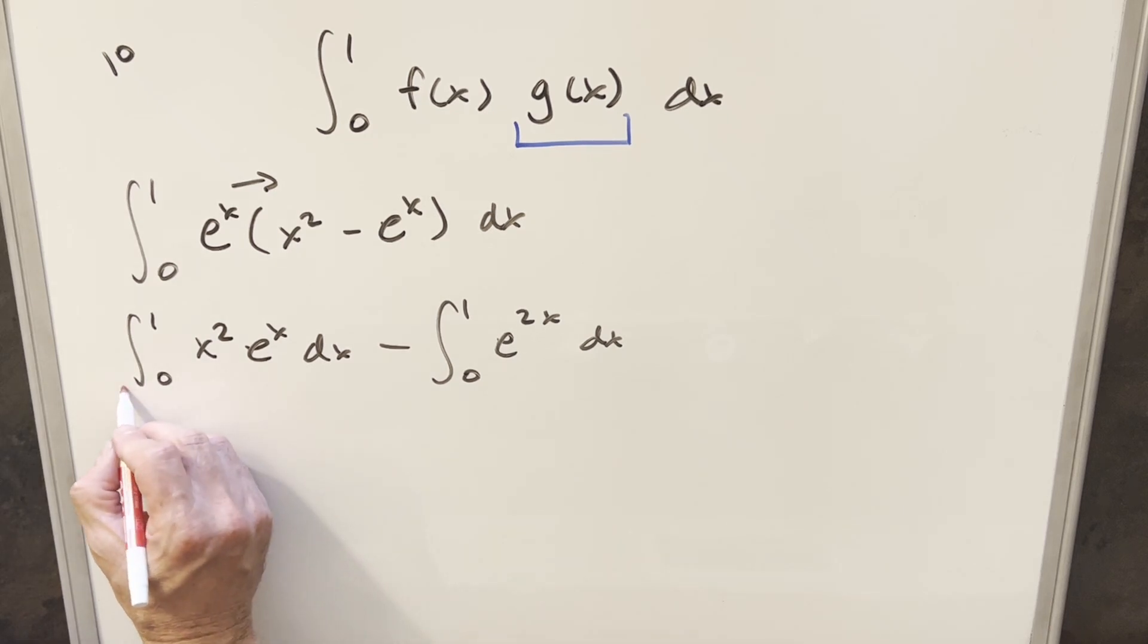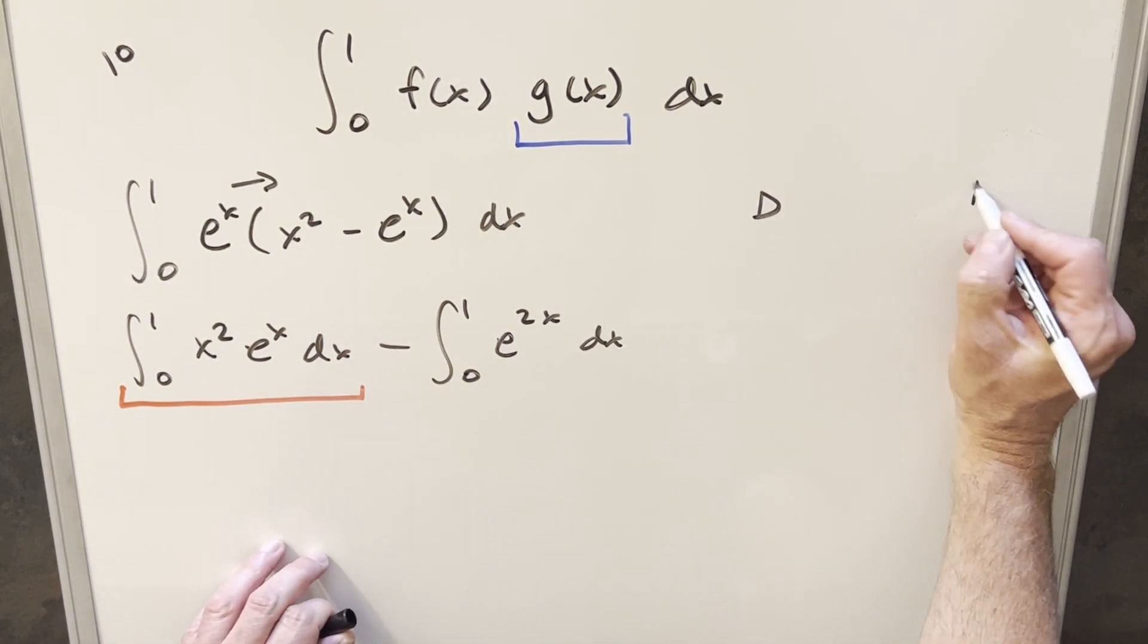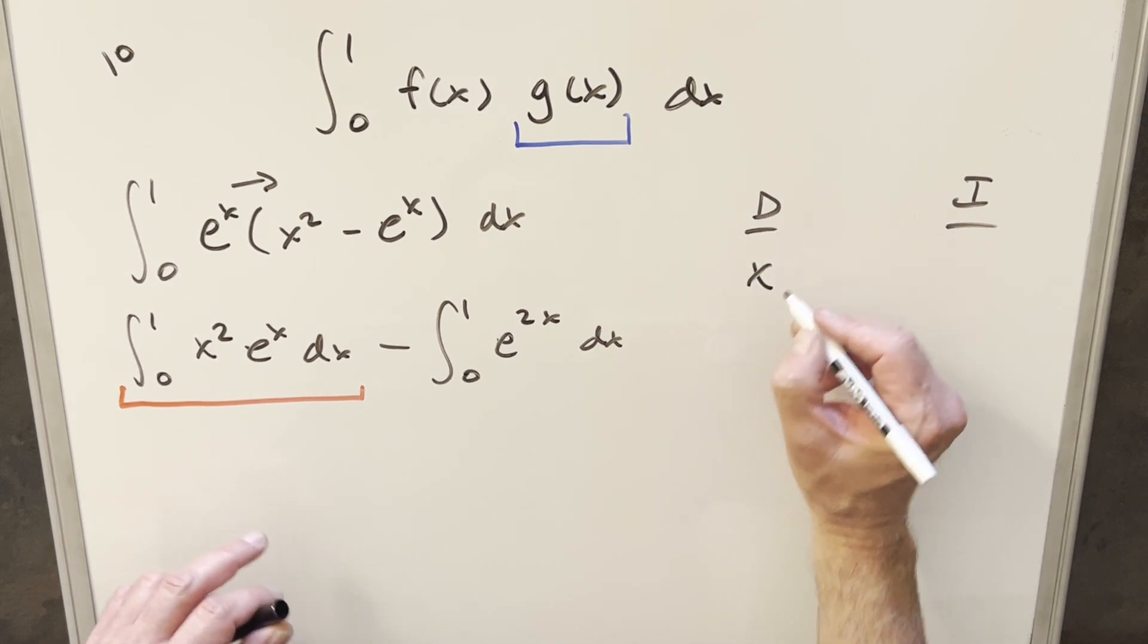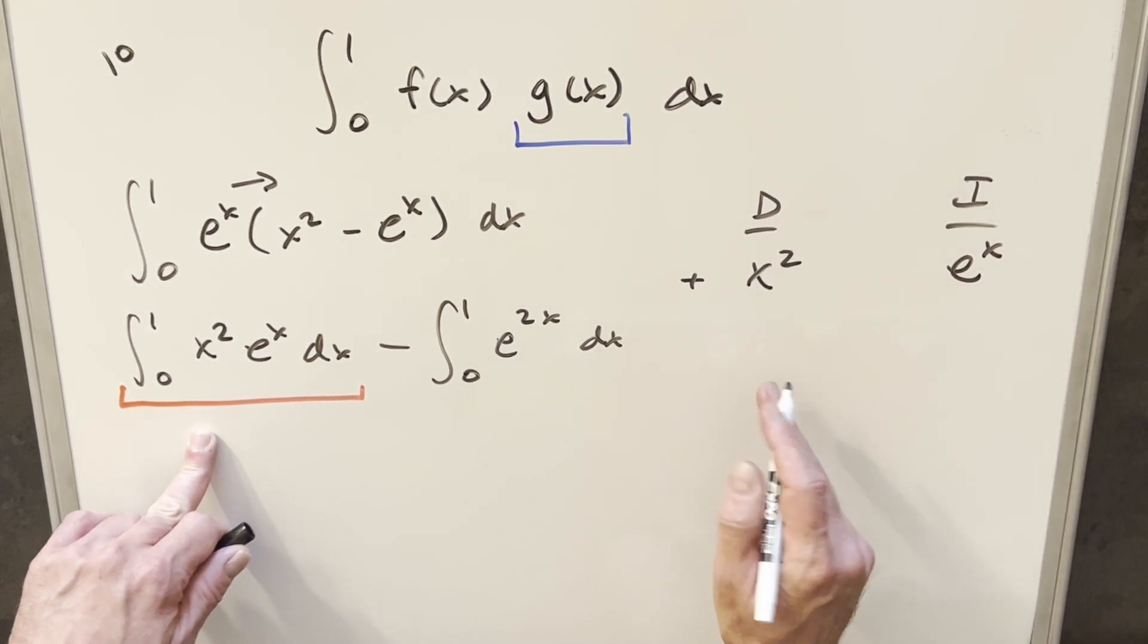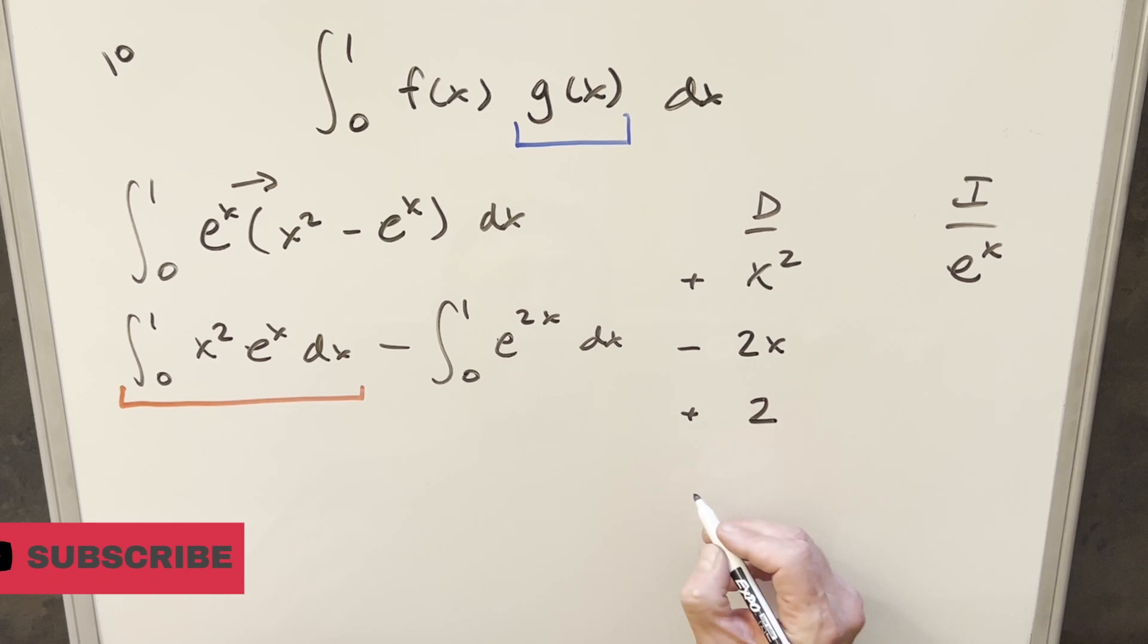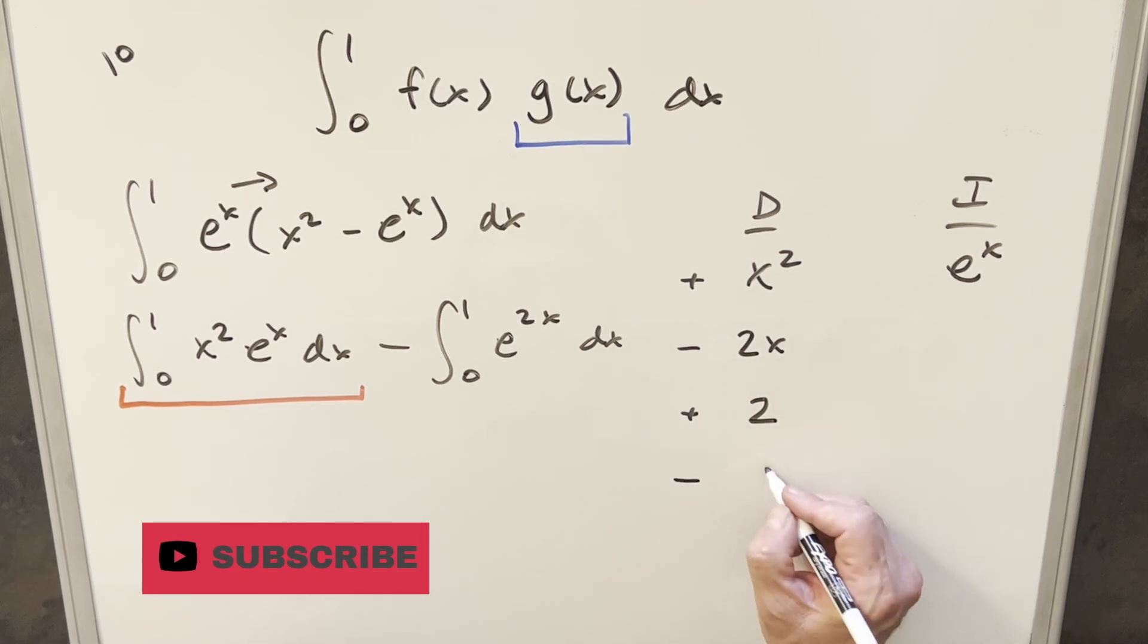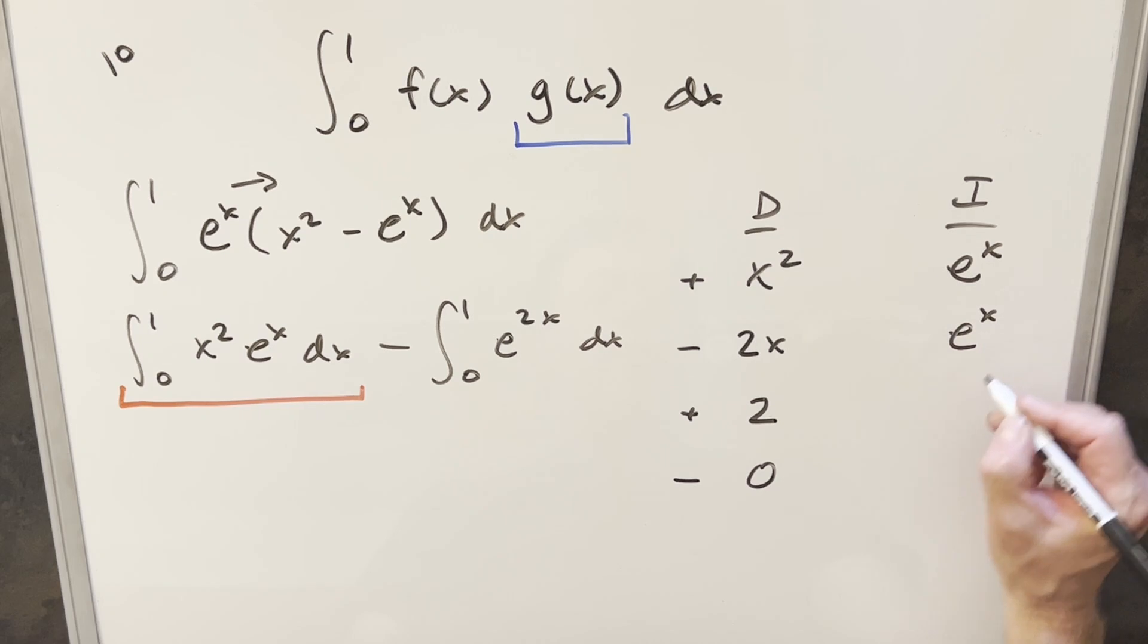Then for this first integral, this one's going to be really easy, so I'm not too worried about that. For the first one, we can just do integration by parts on this. I'm going to use the DI method or tabular integration over here to the right. I'm going to differentiate x squared, integrate e to the x. So let's differentiate this all the way down to 0. Derivative of this is going to be 2x. Derivative of this is going to be 2. Eventually, the derivative of this is going to be 0. Then integrating over here, all these integrals are just going to be e to the x, e to the x, e to the x.